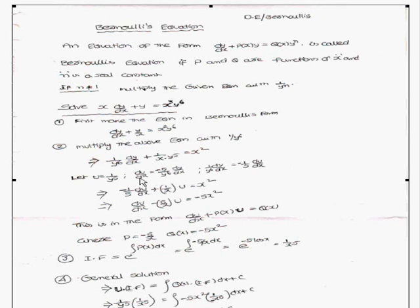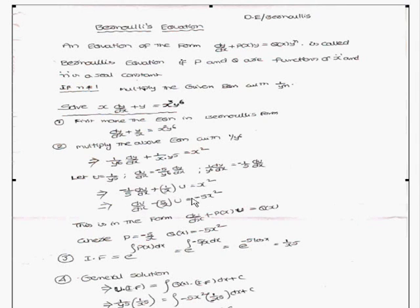Substituting into the equation gives −(1/5)·(du/dx) + (1/x)·u = x². Simplifying, du/dx − (5/x)·u = −5x². This is now in the form of a linear differential equation, where p(x) = −5/x and q(x) = −5x².